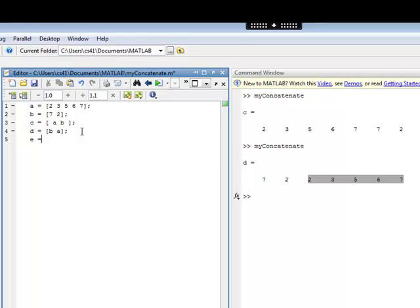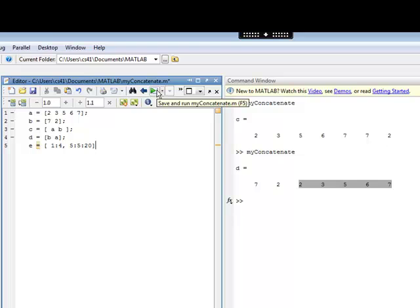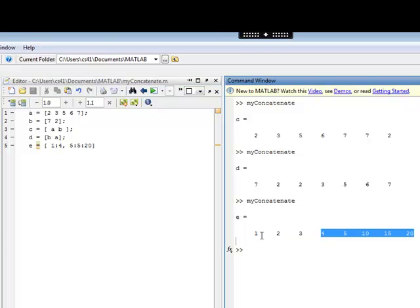It can get as wild and crazy as you want. I can actually use the range. So 1 colon 4, that is a vector. And this is a vector as well. So I'm sticking two vectors together, which is perfectly legal. So I do that. I get the 1, 2, 3, 4, which come from the 1 colon 4. And I get the 5, 10, 15, 20, which come from the 5 colon 5 colon 20.